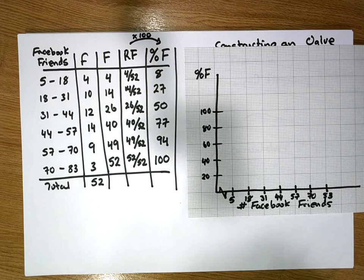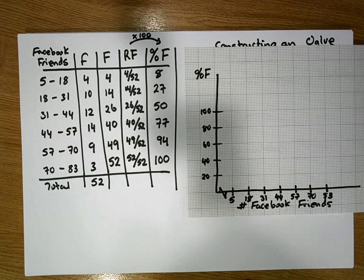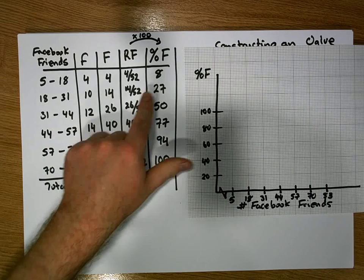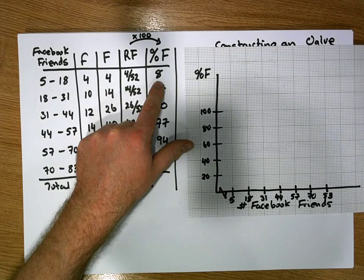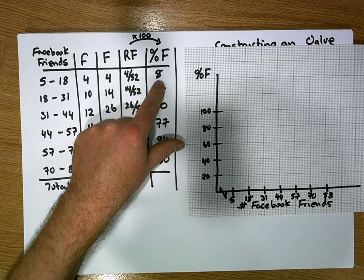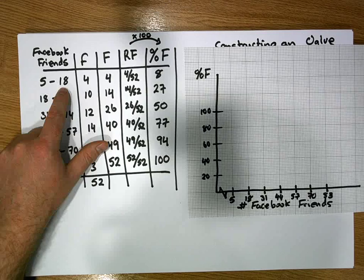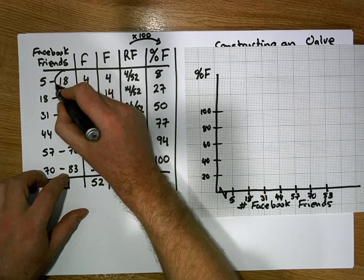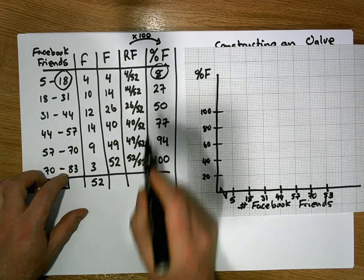The next stage is, don't forget the cumulative frequencies or the percentage cumulative frequencies represent the percentage of observations that are less than our upper bounds. So we associate the upper bounds of our classes with our percentage cumulative frequencies.